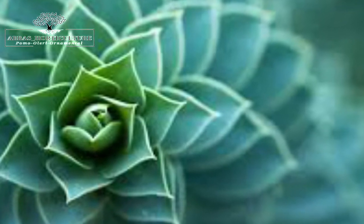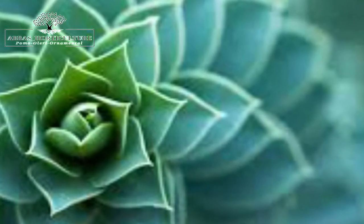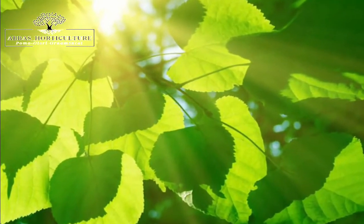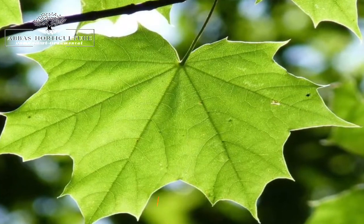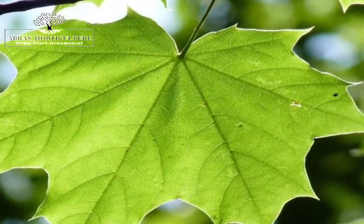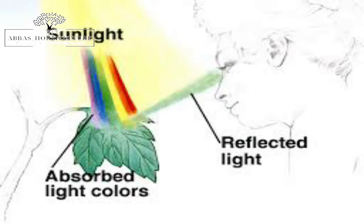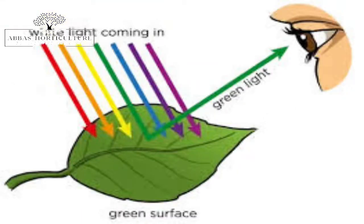Now you might ask: why is chlorophyll green in color? This brings us to another question — what makes an object appear a certain color? When light is incident on an object, reflection, absorption, and transmission happen. Some part of the light is absorbed, and the rest gets reflected. The color of an object is the color of the reflected or transmitted part of light.